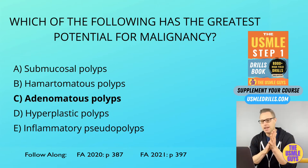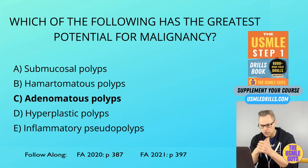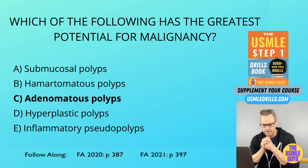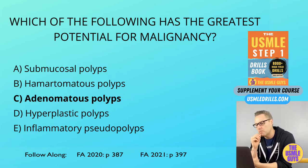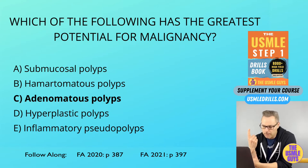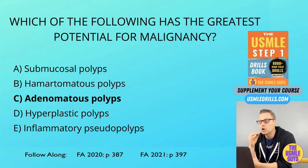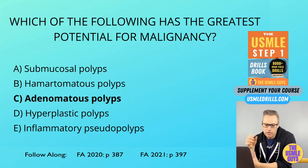Mucosal polyps are typically smaller than five millimeters and they look like normal mucosa — remember those two facts. The last of our non-neoplastic polyps is the submucosal polyp, which is composed of a single tissue type, and that can include lipomas, leiomyomas, neurofibromas, or mucosal Schwann cell hamartomas.